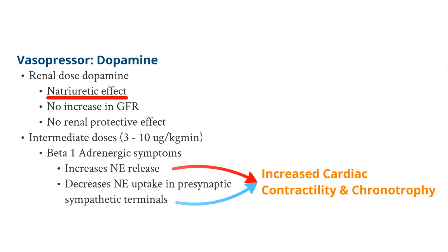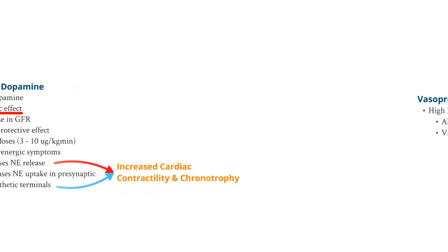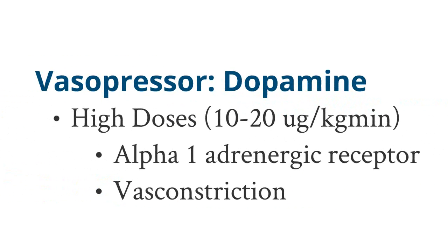At intermediate doses of 3 to 10 mcg per kilogram, you get beta-1 adrenergic effects — an increased norepinephrine release and a decrease in norepinephrine uptake in the presynaptic sympathetic terminals — leading to increased cardiac contractility and chronotropy. High doses of dopamine at 10 to 20 mcg per kilogram result in alpha-1 adrenergic receptor activation and resulting vasoconstriction, causing an increase in systemic vascular resistance and helping prop up the blood pressure.